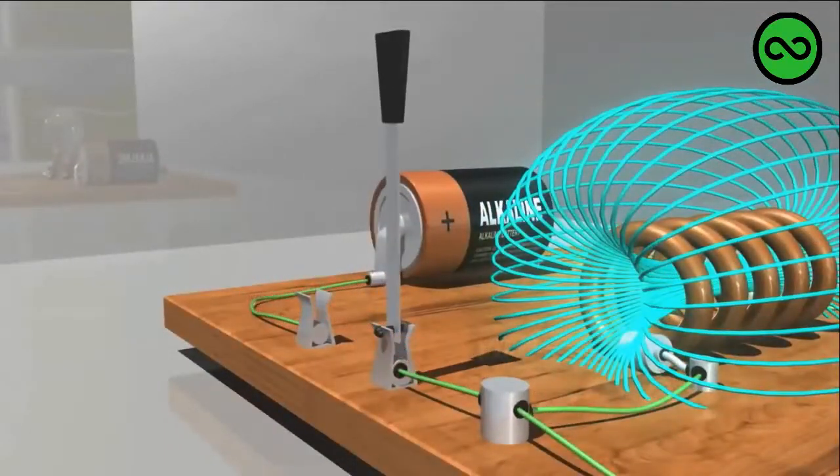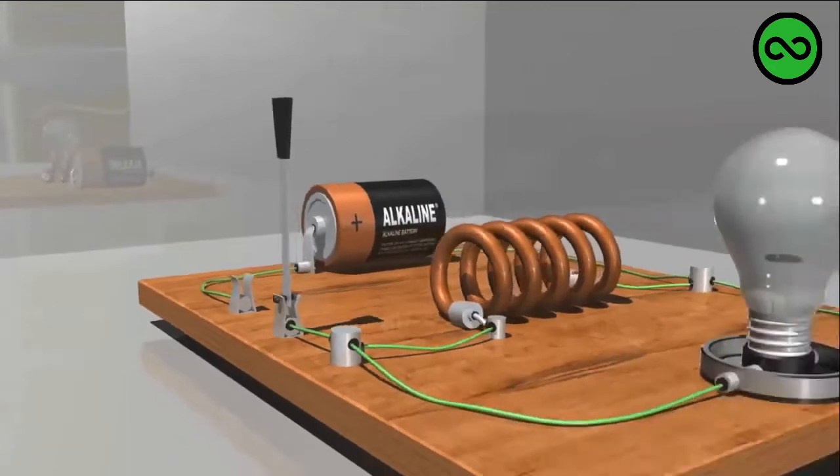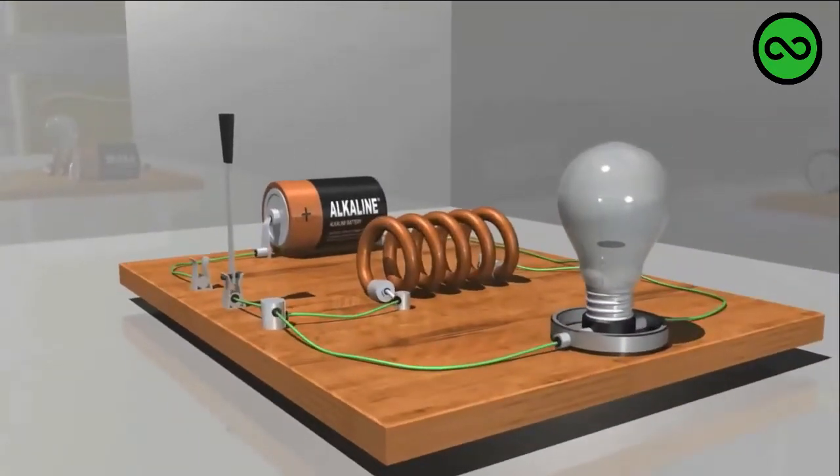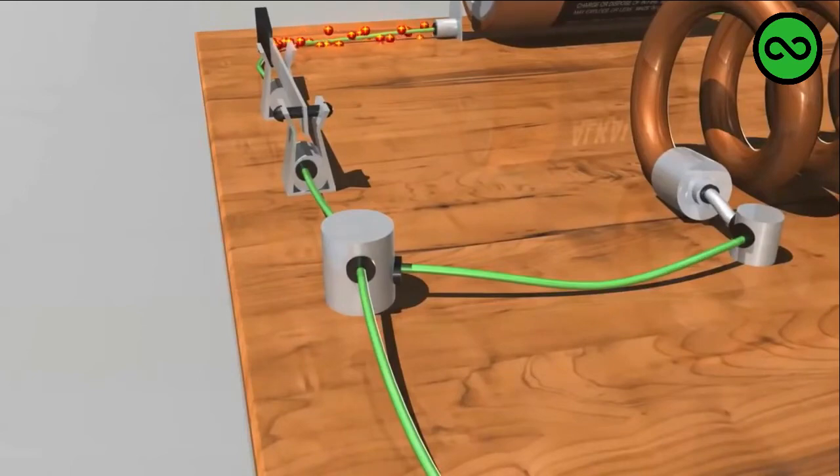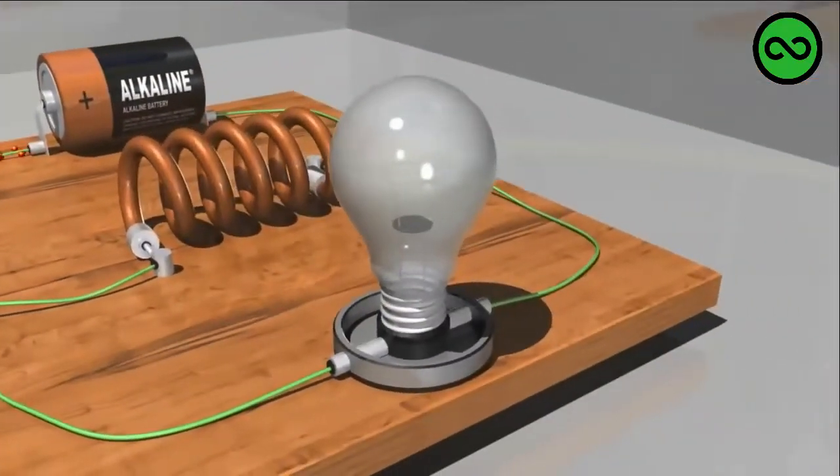In this parallel circuit, the current can travel either through the inductor or through the light bulb. When the current reaches this junction, it splits and flows to both the inductor and to the light bulb.